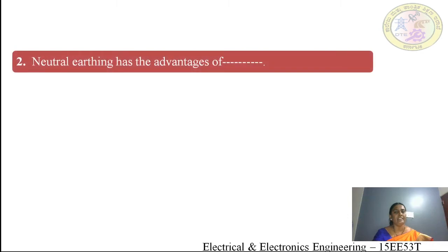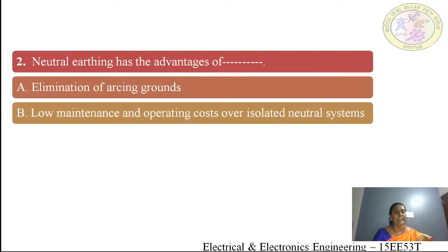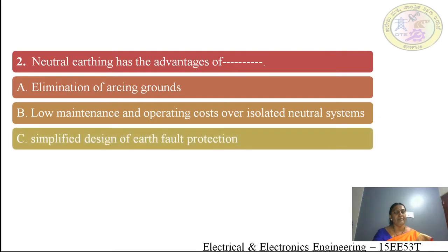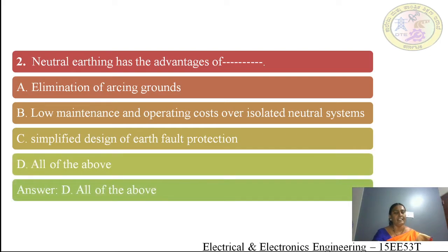Second question: neutral earthing has the advantage of — (A) elimination of arcing grounds, (B) low maintenance and operating cost over isolated neutral system, (C) simplified design of earth fault protection, (D) all of the above. The answer is all of the above — neutral earthing provides all three of these advantages.